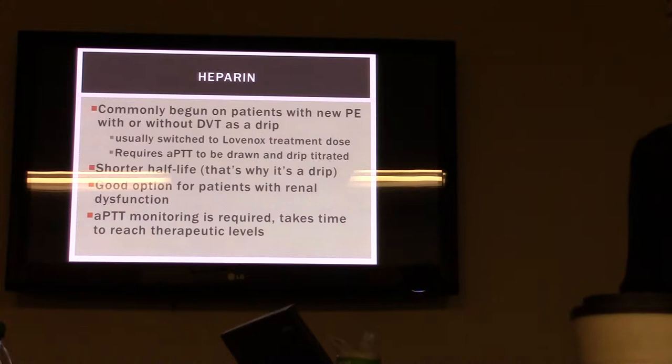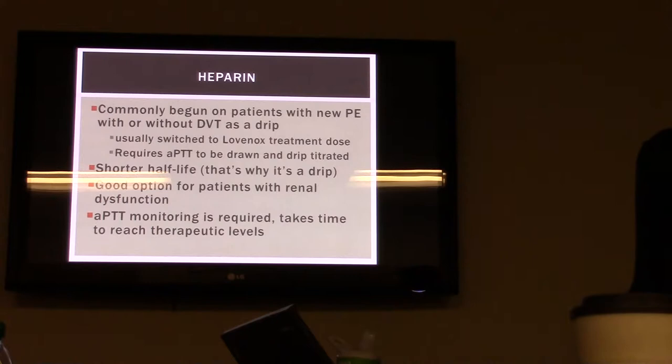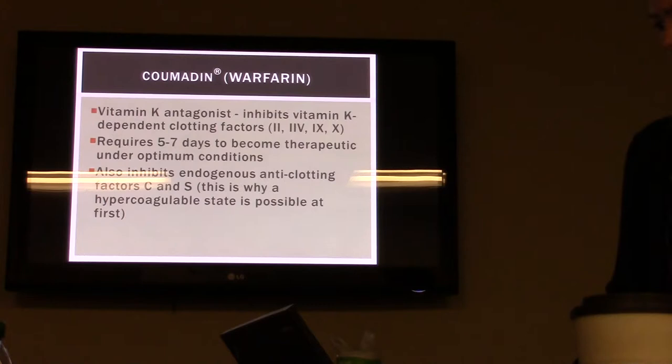For heparin, it's usually begun on patients with a new pulmonary embolism with or without DVT as a drip. It's usually switched to Lovenox treatment dose. With heparin you have to get an aPTT, and we'll talk about the heparin protocol shortly. Heparin has a short half-life, which is why it's a drip. It's a good option for patients with renal dysfunction because you don't have to worry about changing the dose. aPTT monitoring is required and it does take time to reach therapeutic levels.